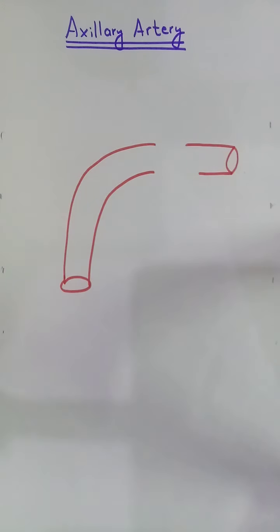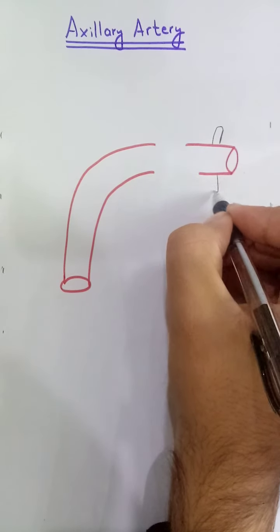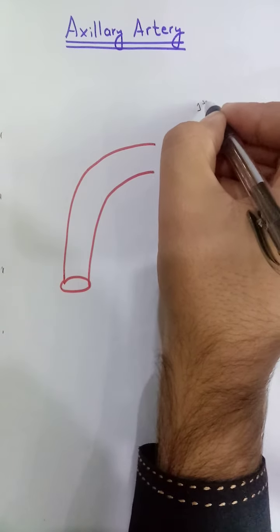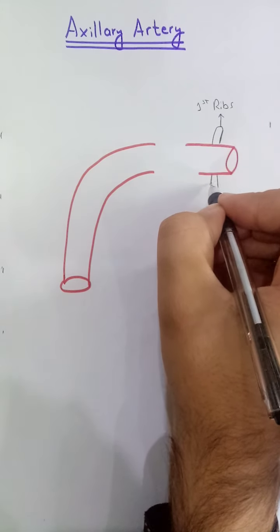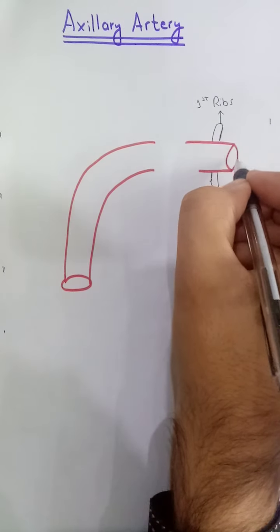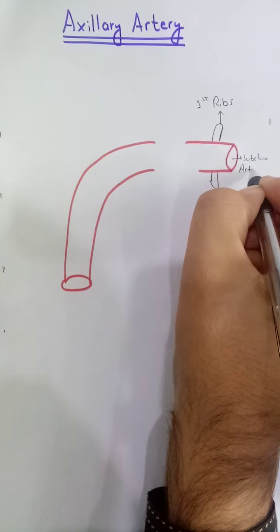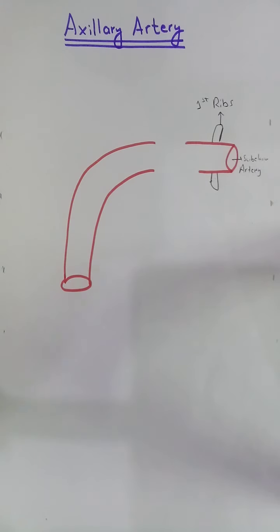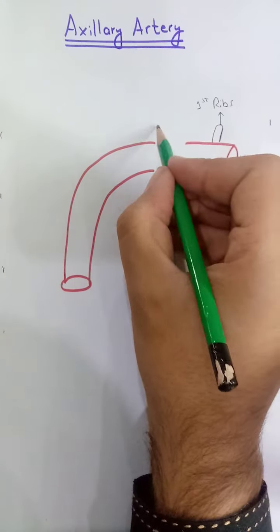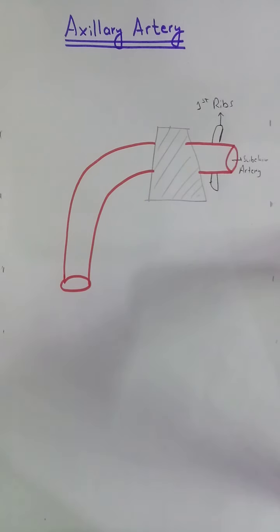This will be the axillary artery. It originates as it passes the first rib — as it crosses the lateral border of the first rib, it becomes the axillary artery. First it is the subclavian artery, and as it crosses the first rib it becomes the axillary artery. Here the pectoralis minor muscle will be present.